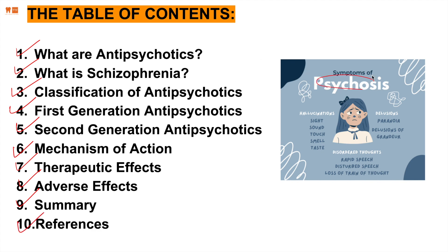To get us warmed up, what are the common symptoms of psychosis? We have hallucinations, delusions, and disordered thoughts. Hallucinations are things we see, hear, touch, smell, or taste that are not real. Delusions could be paranoia, as if someone is trying to get us. Disordered thoughts include rapid speech, disturbed speech, and losing a train of thought.